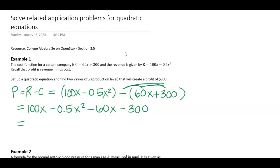I'm going to distribute this negative and get 100x - 0.5x² - 60x - 300. I'm going to write this in standard form while also combining like terms, so I'm going to put my x² first.